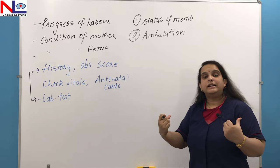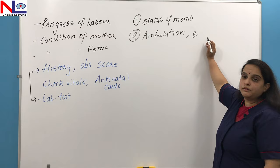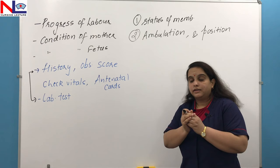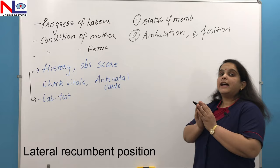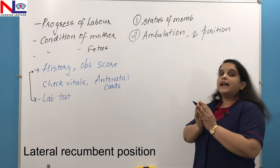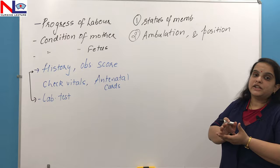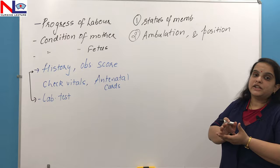If the membranes have ruptured, we ask the woman to lie down in bed. The preferred position is the lateral recumbent position. We avoid the supine position because the gravid uterus can compress the vena cava, causing supine hypotension. So to avoid supine hypotension syndrome, we give the lateral recumbent position when the membrane has ruptured.